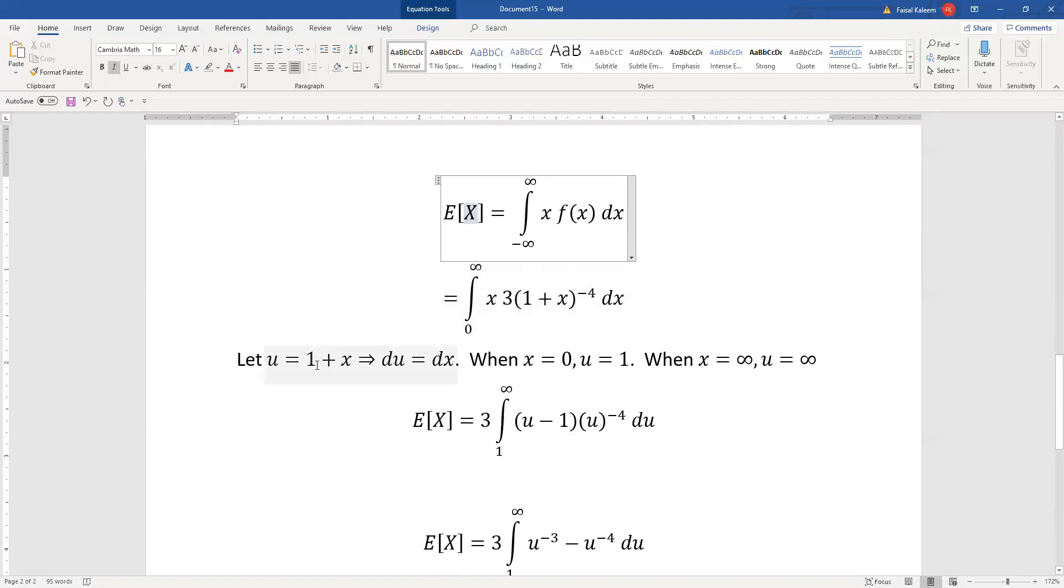So you do u equals 1 + x. That means du will be dx. So when x is zero, u is 1 + 0, which is one. And when x is infinity, u is 1 + infinity, which is infinity. And so it will be three, one to infinity.